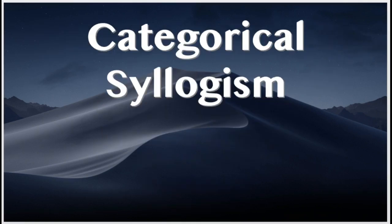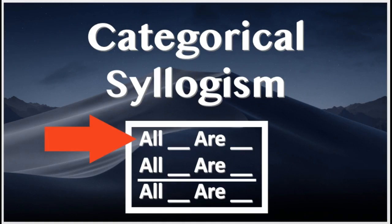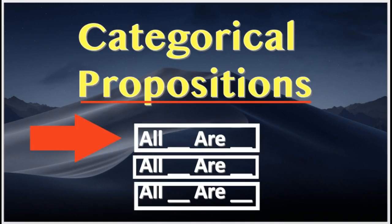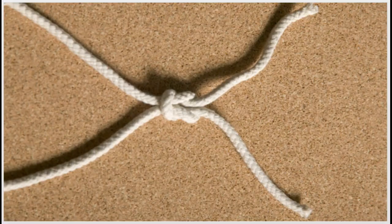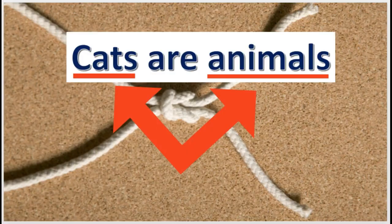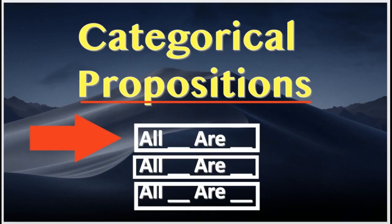The categorical syllogism is made up of statements. These statements are called categorical propositions. An interesting thing to notice about categorical propositions is that they join or relate two things together. They relate classes and categories. For now, we will focus on standard form categorical propositions.